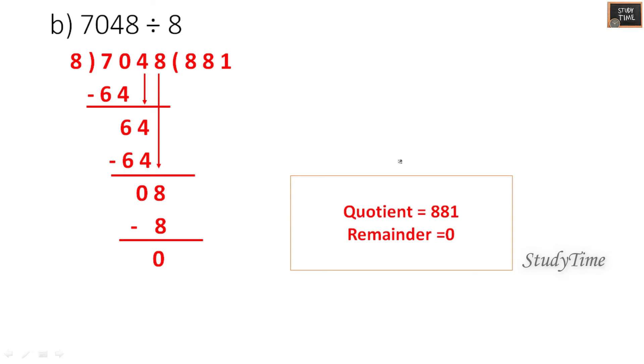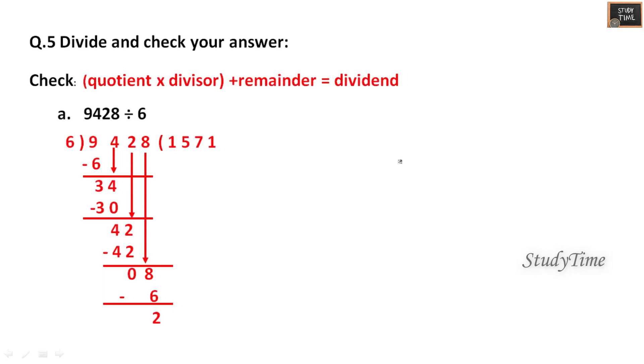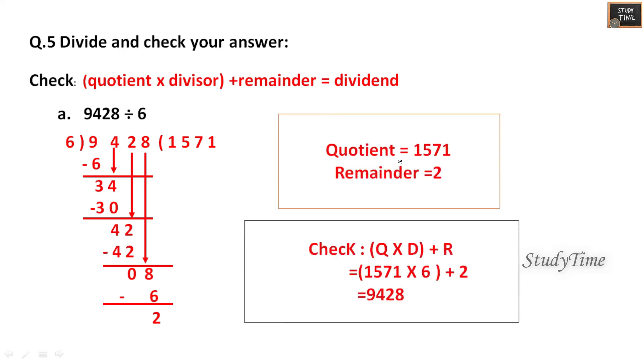7048 divided by 8, this you can do. Divide and check your answer. We already see you have to multiply the quotient and the divisor and add it with the remainder. This you can easily check.